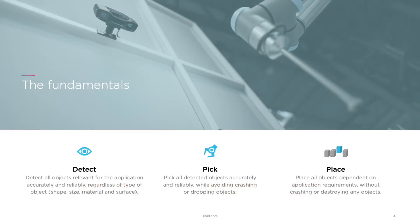Looking at the fundamentals of a pick-and-place operation, we have three important aspects. The first is detection — you want to detect all objects relevant for your application. That has to be accurate and reliable regardless of type of object, whether it's a different shape, size, material, or surface.